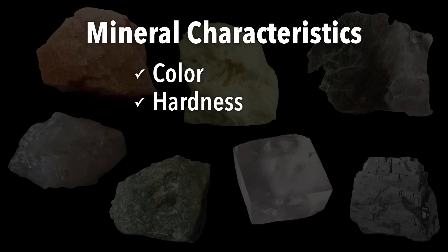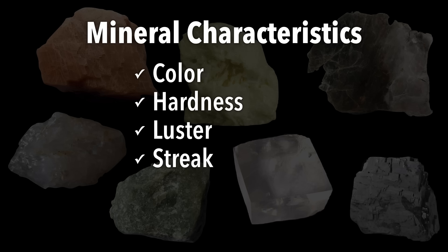We also look at hardness using the Mohs scale of hardness, with 1 being the softest mineral and 10 being the hardest. What we will often do is take a piece of glass, which has a hardness of 5.5, and try and scratch it with a mineral sample. If it leaves a scratch, that means the mineral is harder than the glass. We can also look at luster — the most simple luster is metallic or non-metallic. Streak would be the color of the mineral in its powdered form, and we would test that using a streak plate.